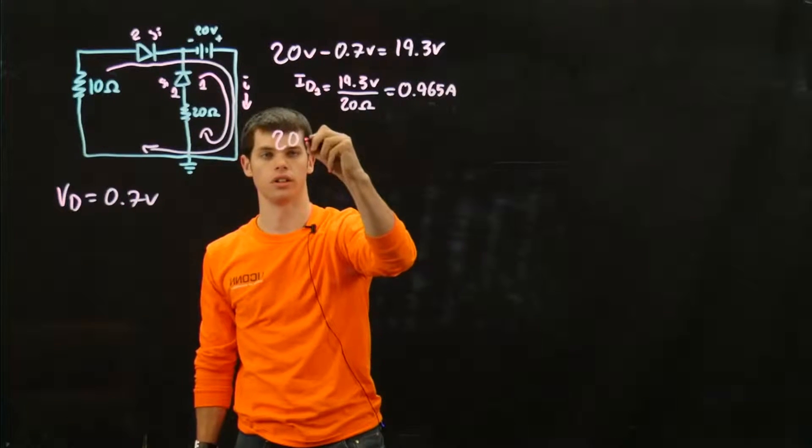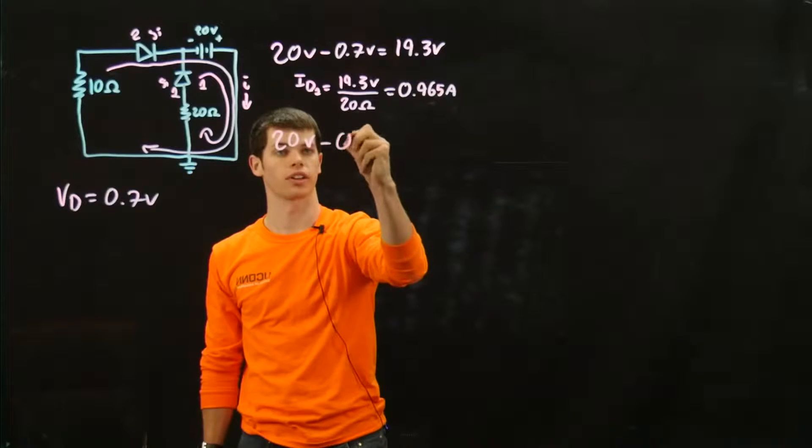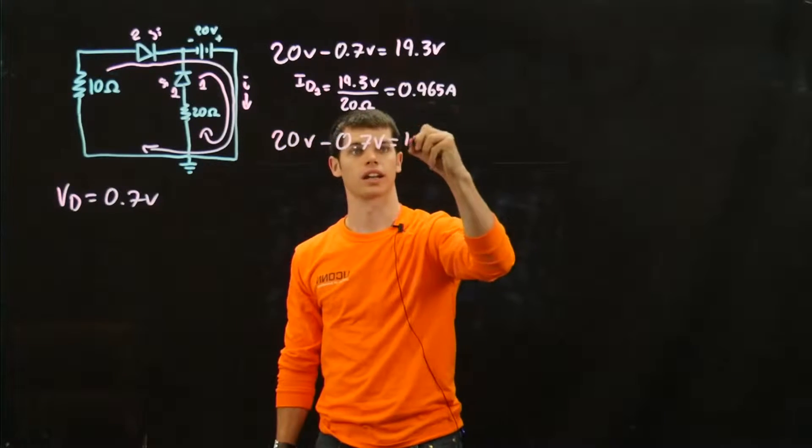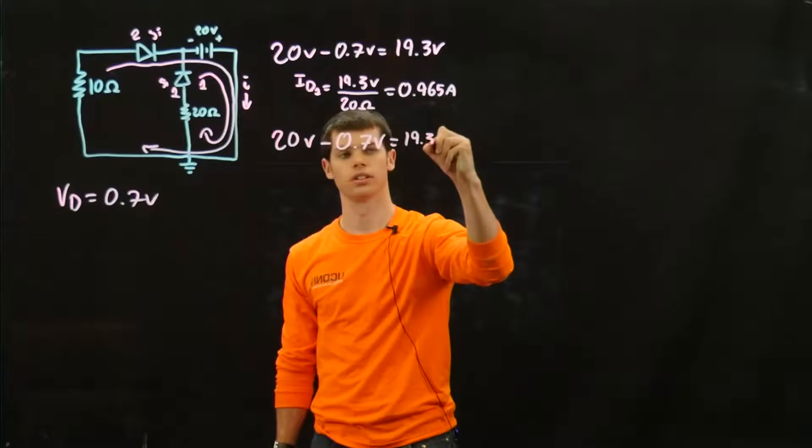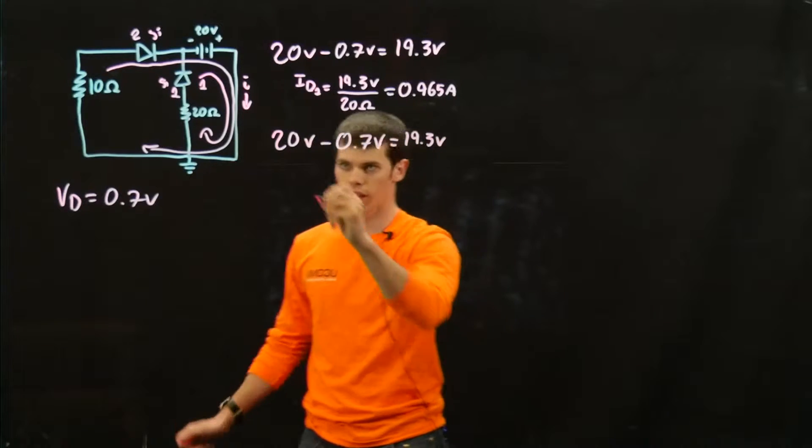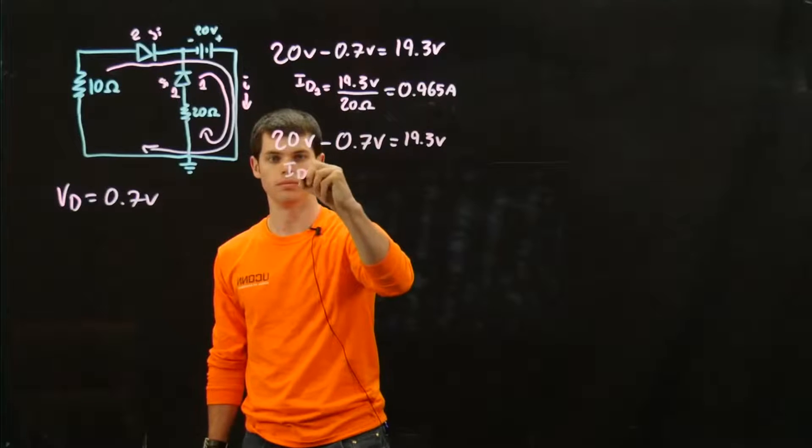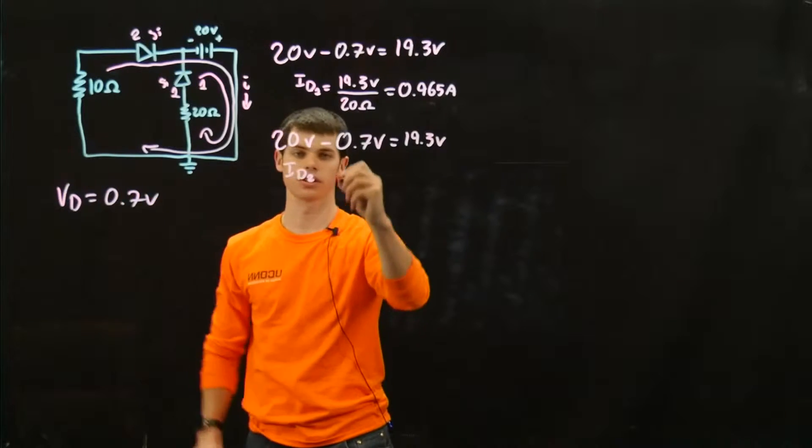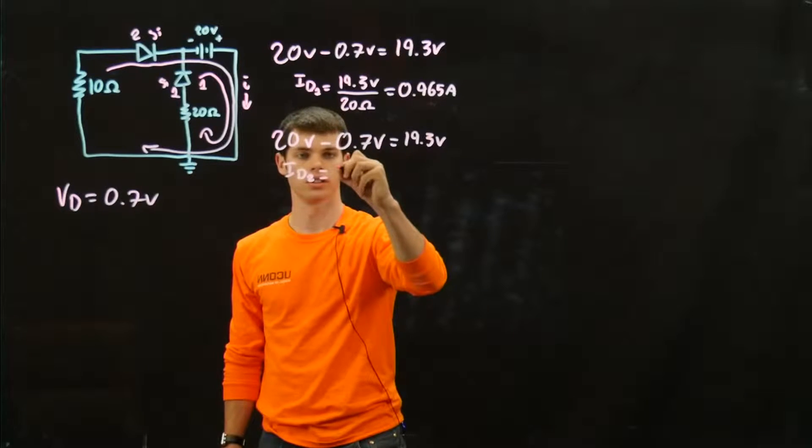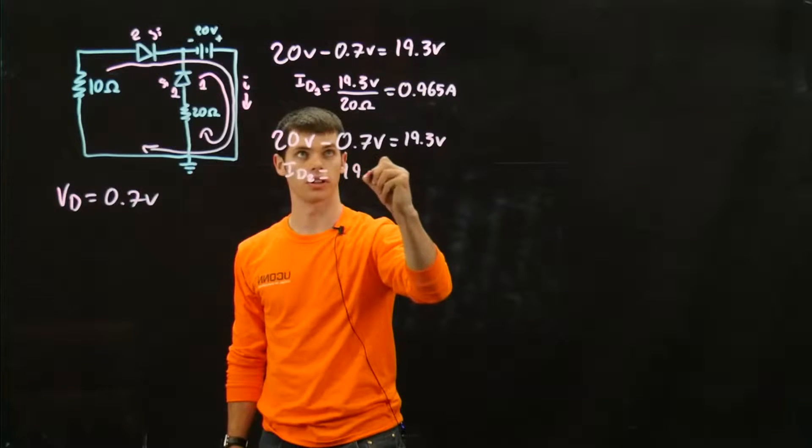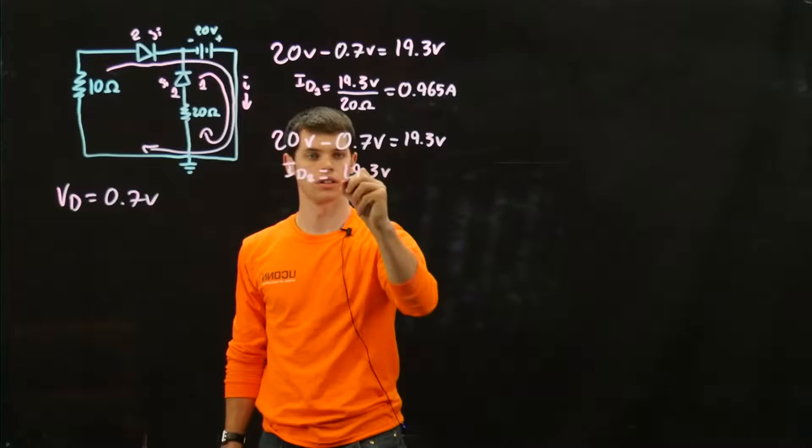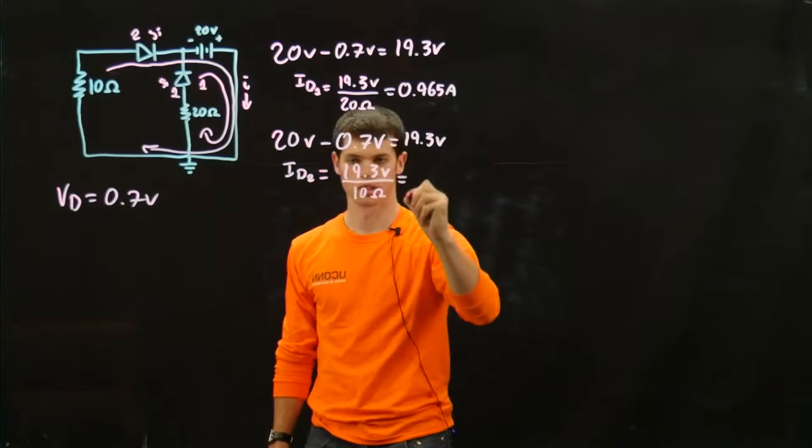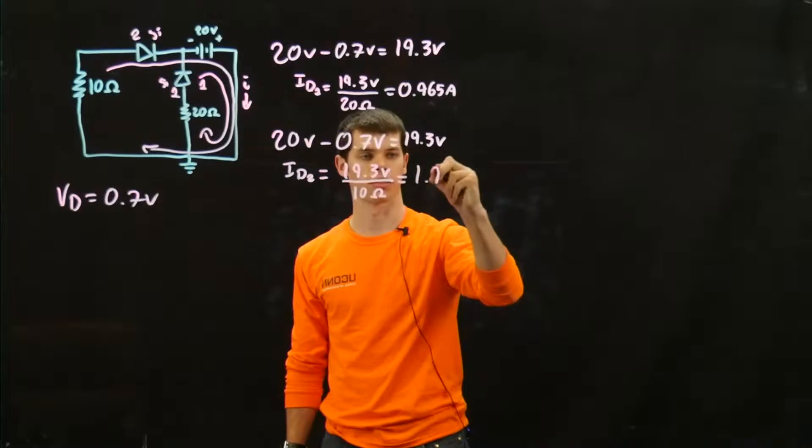We've got 20 volts, and we've got that 0.7 again, and we're going to get 19.3 volts. Id2. Now we have a 10 ohm resistor. So 19.3 divided by 10 ohms. And that's going to give us 1.93 amps.